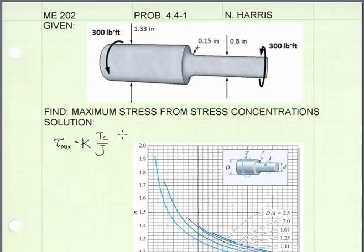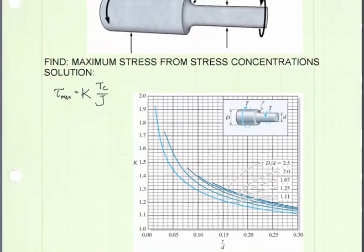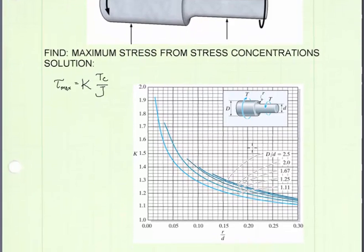I've written the equation that we're going to be using to get our answer for this problem. The maximum shear stress is equal to this multiplier K times the internal torque T times the radius C divided by the polar moment of inertia J. To find K we're going to be using this chart shown here.